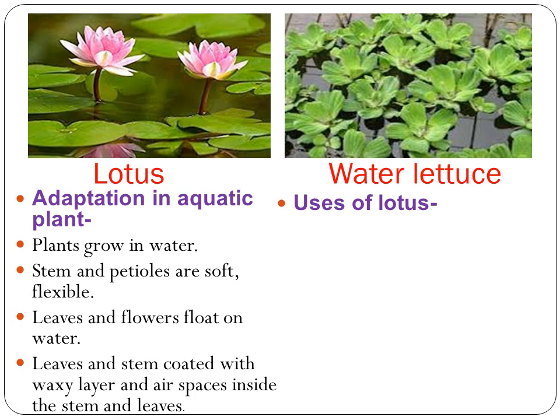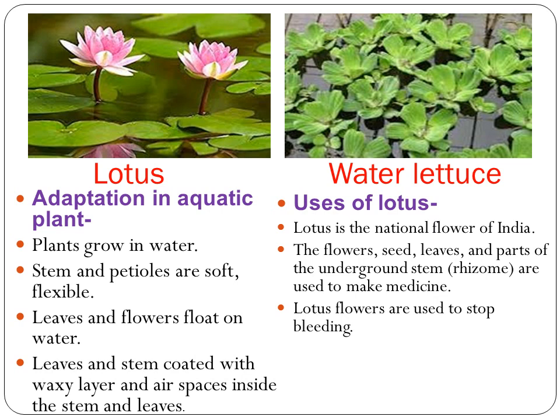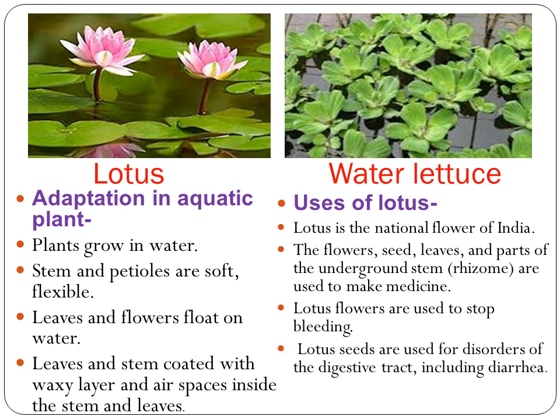Uses of lotus: Lotus is the national flower of India. The flower, seed, leaves, and part of the underground stem are used to make medicine. Lotus flowers are used to stop bleeding. Lotus seeds are used for disorders of the digestive tract, including diarrhea.